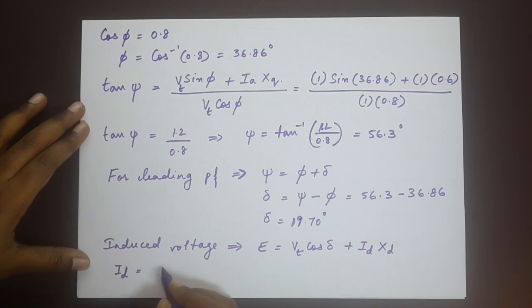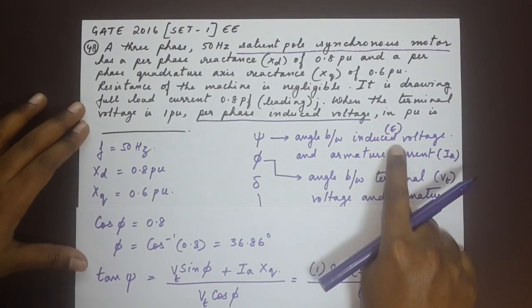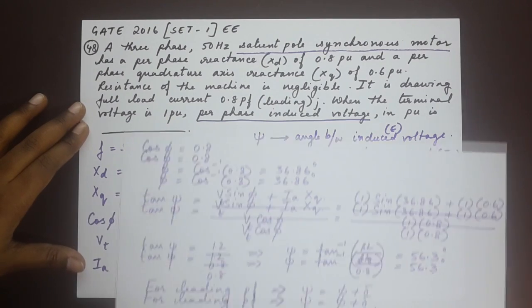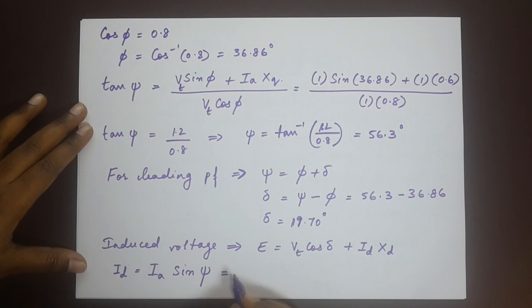So id can be written in terms of Ia, that is the armature current into sin of psi, sin of the angle between the induced voltage and the armature current. So id, once you solve that is 1 into sin of 56.3, it gives us 0.831.